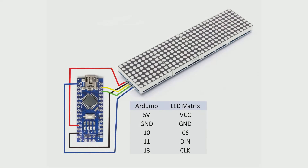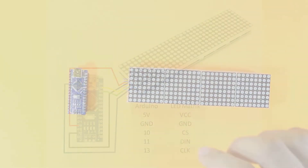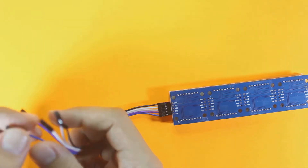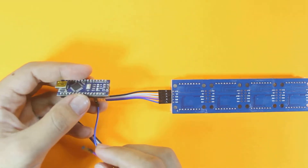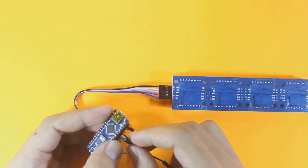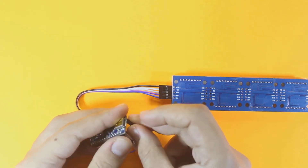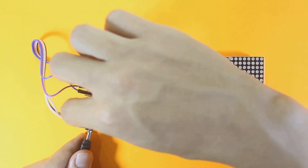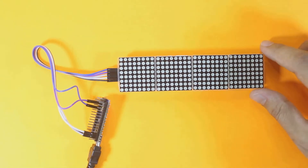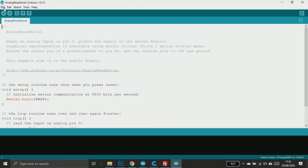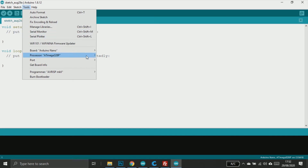Here's the wiring diagram, so let's start the wiring. Once the wiring is done and you are confident with that, move to Arduino IDE. We need the MD Parola library.